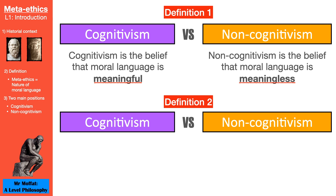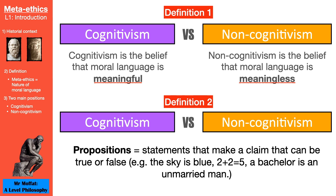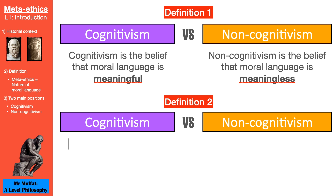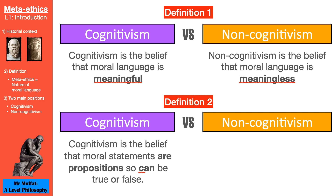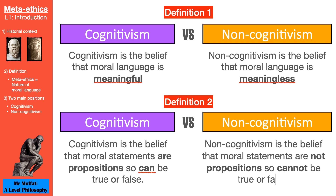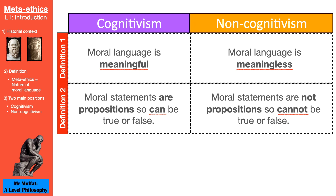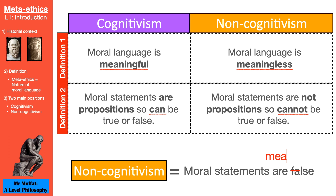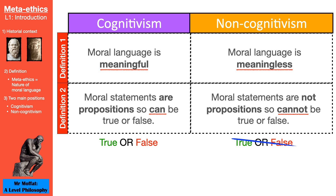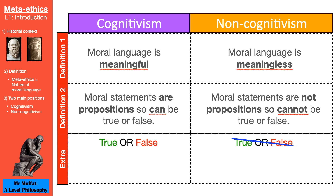A more complicated definition — one that lets you show off a little bit more — involves the word proposition. A proposition is a statement that makes a claim about something that can be true or false. Cognitivists think moral statements are propositions, so they can be true or false. Non-cognitivists think moral statements are not propositions, so cannot be true or false. Where students get confused is that non-cognitivism is not the same as saying moral statements are false — they're saying moral statements are meaningless, not false. Anyone who thinks moral statements can be true or false is on the same side: cognitivism.